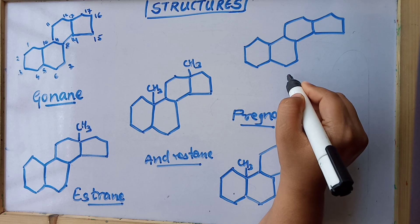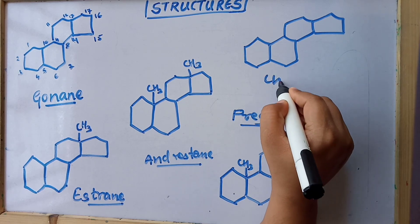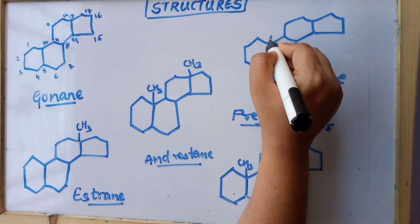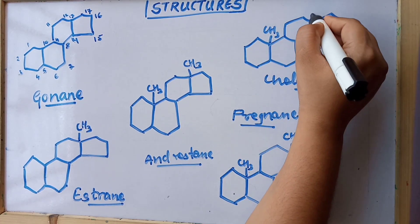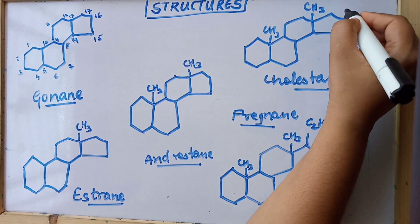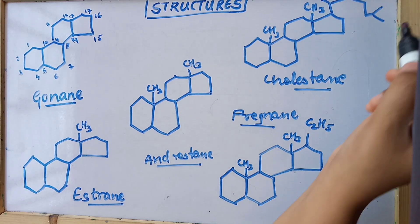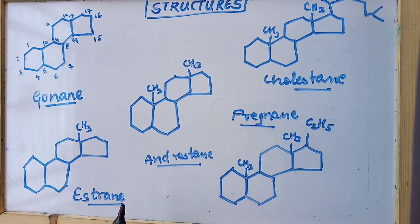And this last structure would be called as cholestane. If we add over here CH3, CH3, and over here CH3 and CH3, these are all structures of the basic steroidal ring on the basis of which you can name any of the steroids you know, like glucocorticoids and many more.